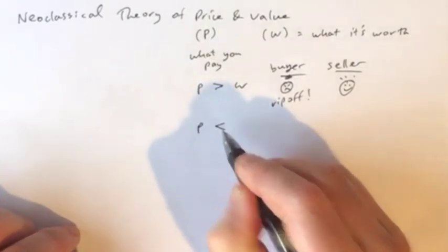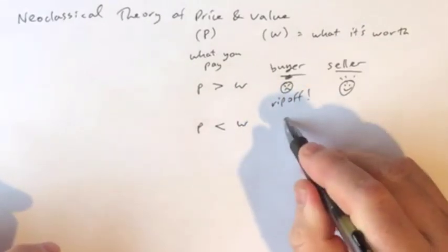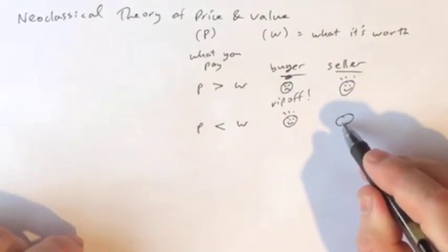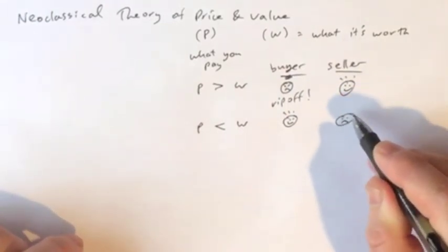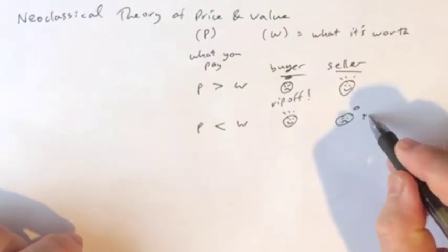Versus, it's also possible that the price is less than the value. In here, the buyer is likely to be very happy. And the seller is likely to be upset. For them, now they see it as a rip-off.